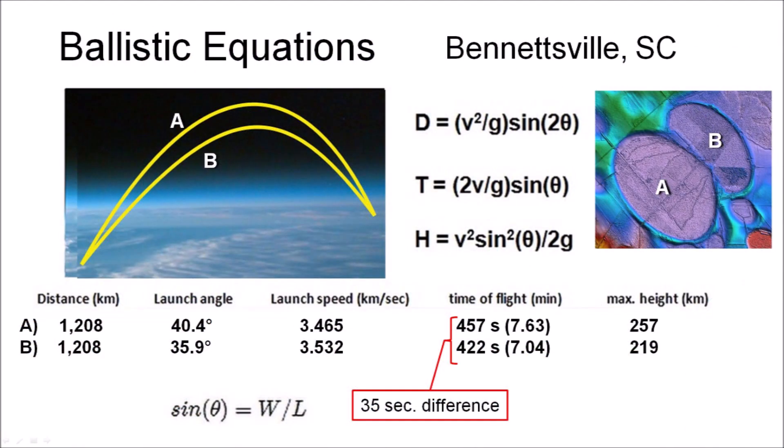The impact angles obtained from the width-to-length ratios and the distance of the basin from the convergence point are used to calculate the characteristics of the trajectories. The ballistic equations indicate that the glacier ice boulder that made basin A had a flight time of 7.63 minutes and reached a height of 257 kilometers above the surface of the Earth. The projectile that made basin B had a flight time of 422 seconds or 7.04 minutes. From the law of superposition, we know that basin B was in place first, and from the ballistic equations, we know that basin A overlaid basin B 35 seconds later.